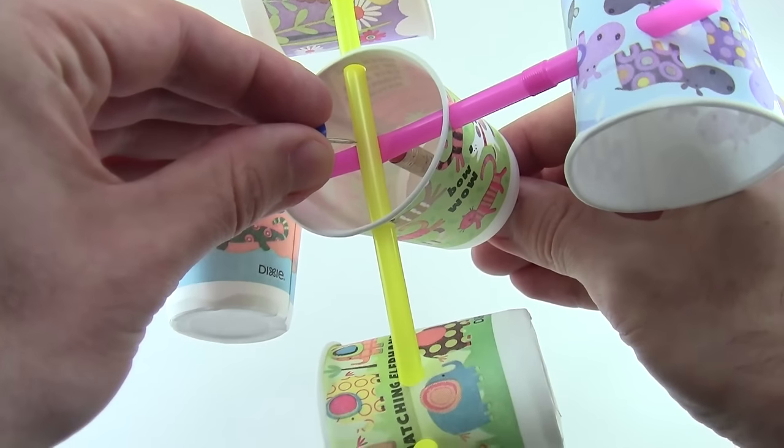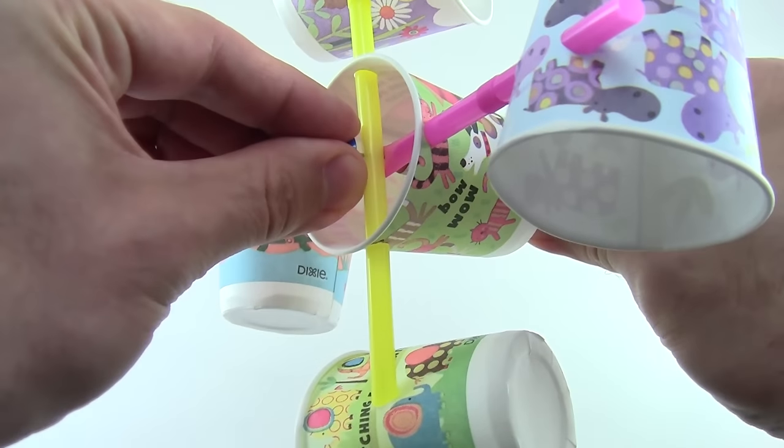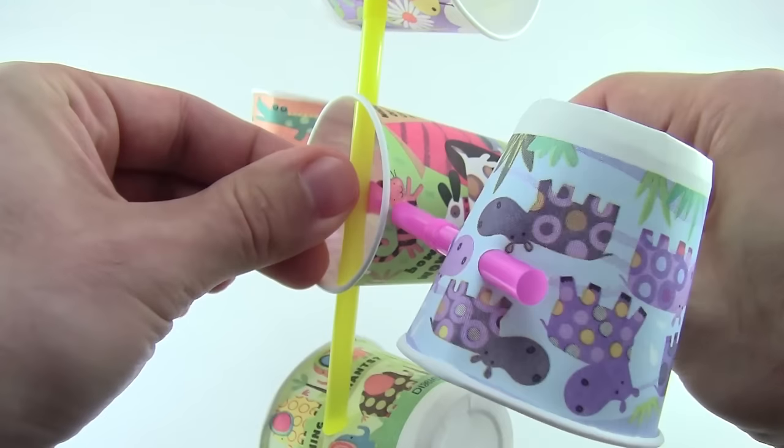Lightly press a push pin through the two straws and into the eraser. Do not push it in too far or this will create too much friction and your anemometer will not rotate.